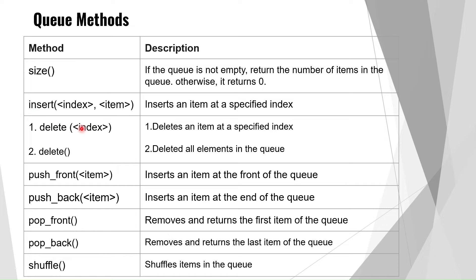The delete method has two forms: if you provide an index in parentheses, it deletes the element at that specific index. If you don't provide any index, it deletes all the elements in the queue and the size becomes zero.